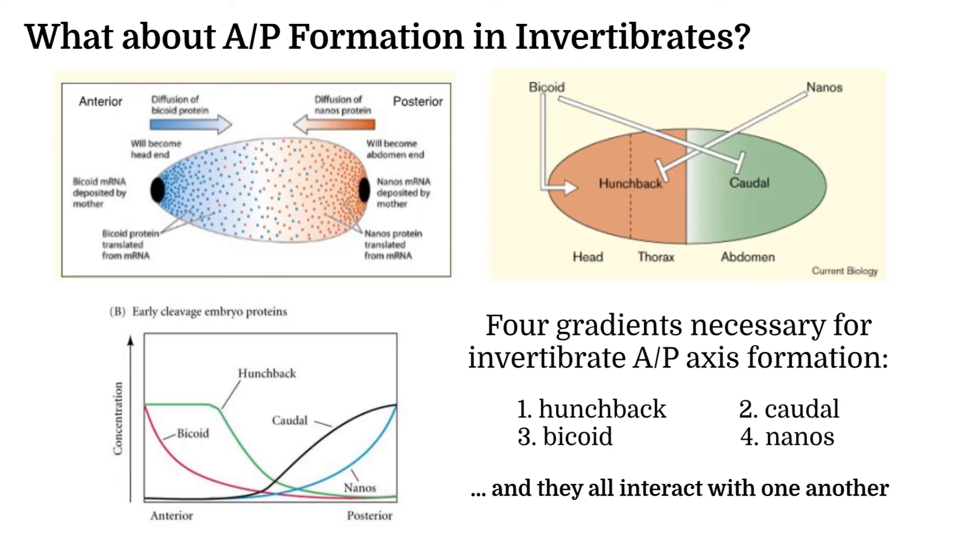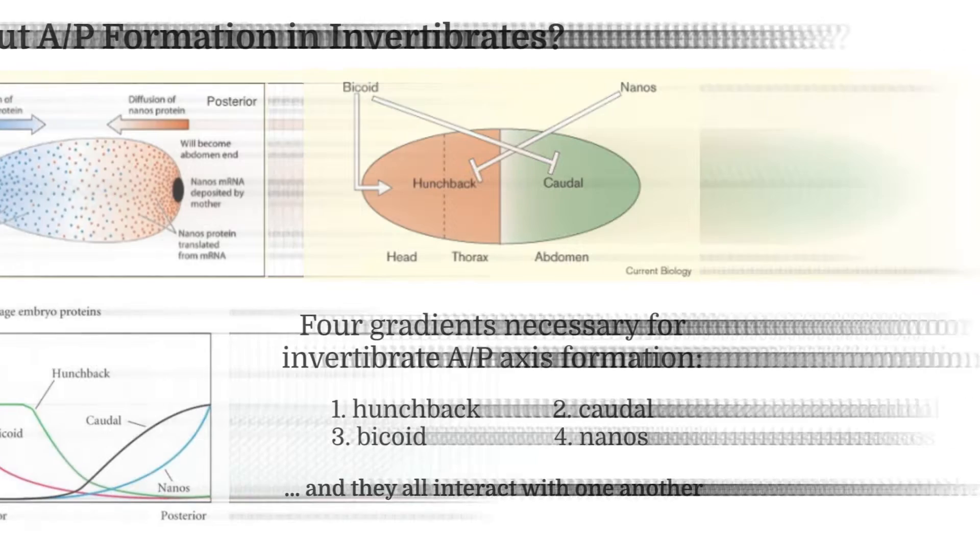For example, a bicoid mutation that inhibits its functionality causes no head to form in an embryo, so their interactions are key to the formation and positioning of the anterior and posterior axis.